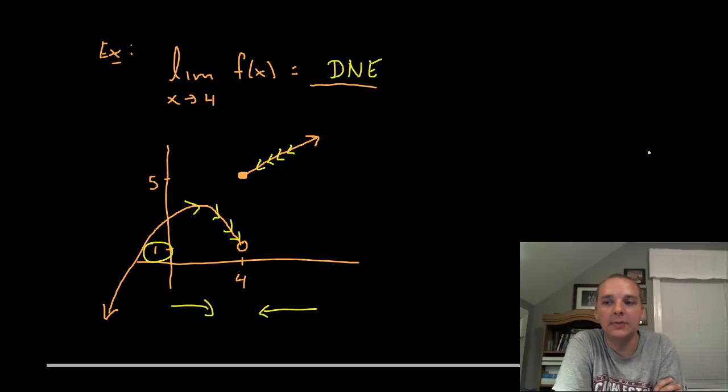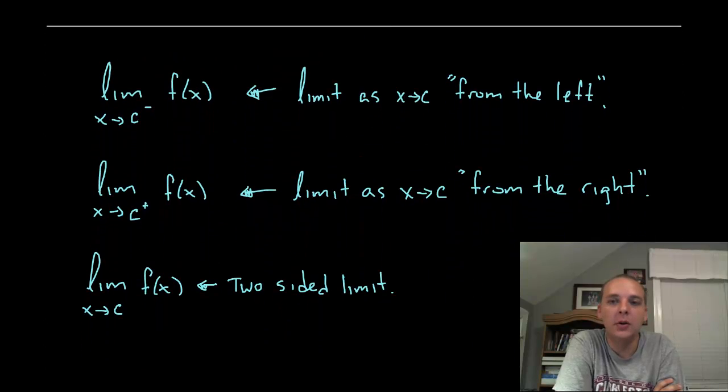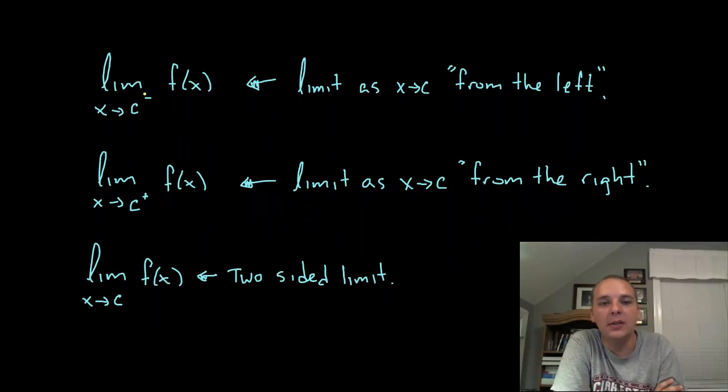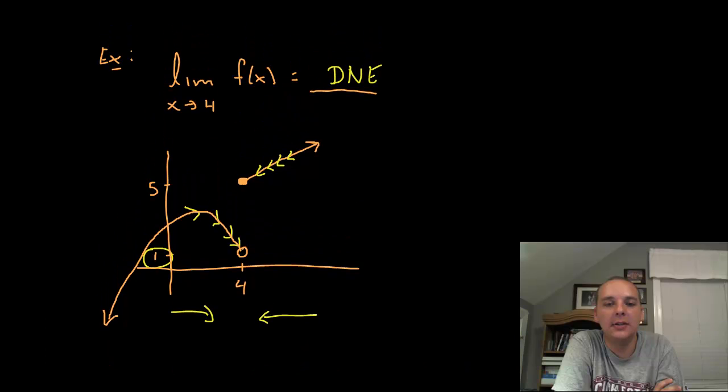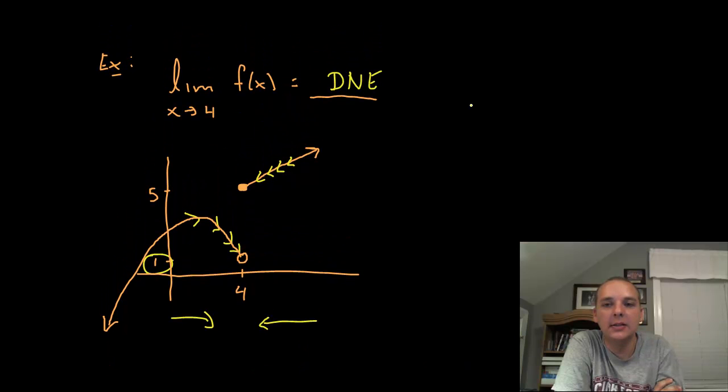And so we already have this intuitive notion of taking limits only from one side or another. That's all a one-sided limit is, so here's the notation. We would say that the limit as x approaches c with a little minus sign in the upper right hand corner of c of f(x) would be defined as the limit as x approaches c from the left. When you have a little negative sign in the upper right hand corner, that means you're looking at the limit just from the left hand side.